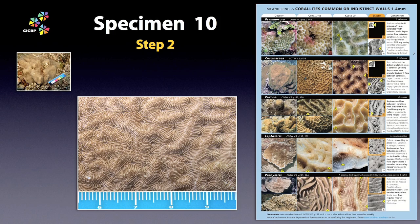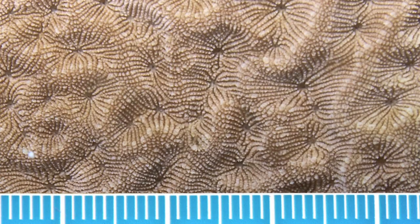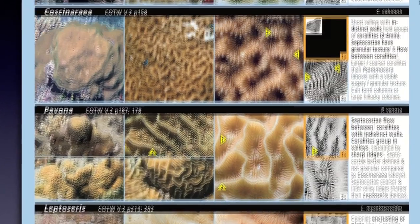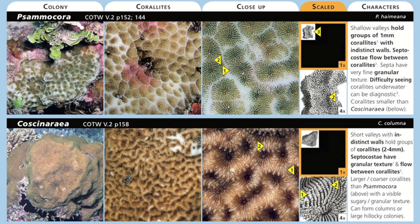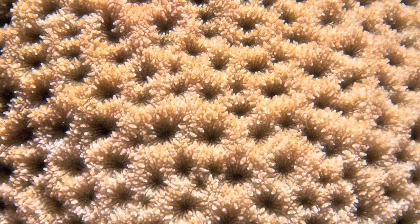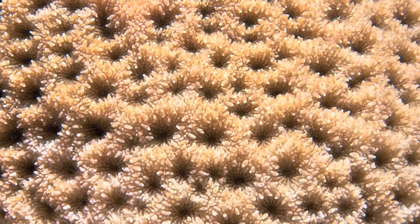Always focus on what you can see first. Look at the septa — they have a granular, sugary texture. That's good information because it eliminates Pavona, Leptoceris, and Pachyceris. Samacora and Costnarea are the genera with granular septocosti. Now it's just a question of scale. Tip: if you can see granular septocosti at all, it's Costnarea — in Samacora, the coralites are so fine they can be hard to see underwater. If the tentacles are extended, it can hide both the meanders and the granular look, so waft some water over the colony surface to make them retract.